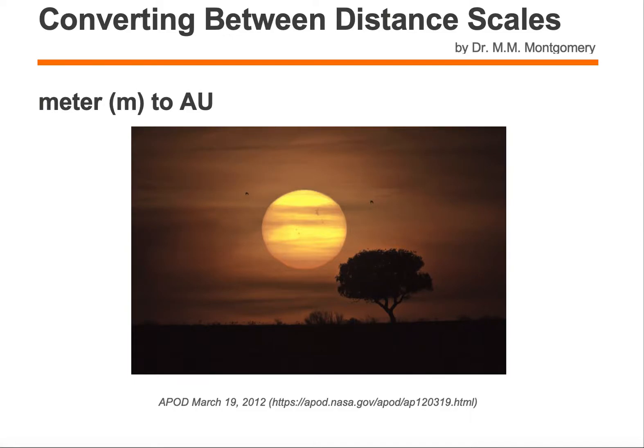Let's look at converting between distance scales. Specifically, we want to convert from a meter, which is given the symbol M, to an astronomical unit, which is given the symbol AU. So we want to convert from meters to astronomical units.